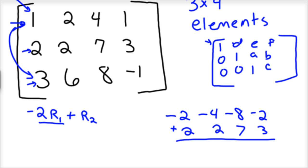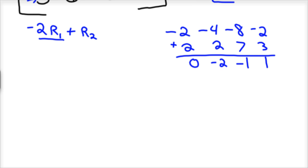I'm going to add that up. And what you end up with when you add those, you'd have 0, negative 2, negative 1, and 1. And so that is my new row 2. So row 2 now equals this.